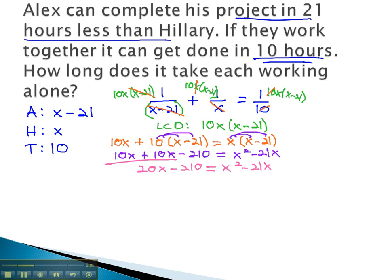We could now try and solve this problem by making it equal to 0 and factoring. However, because of the large 210, factoring might be difficult. Instead, let's use the quadratic formula on this problem by making it first equal to 0 by subtracting 20x from both sides and adding 210. This gives us 0 equals x squared minus 41x plus 210.